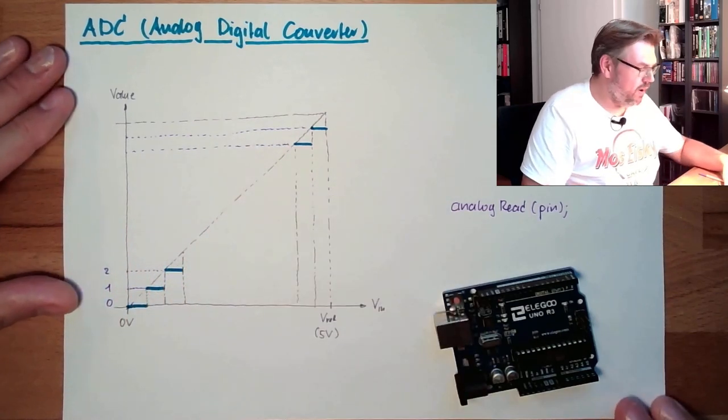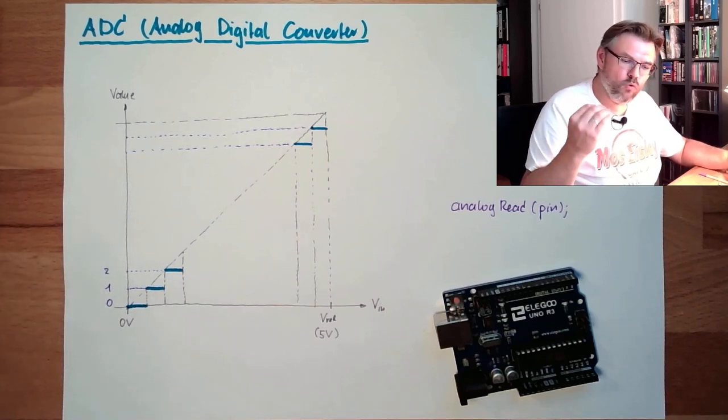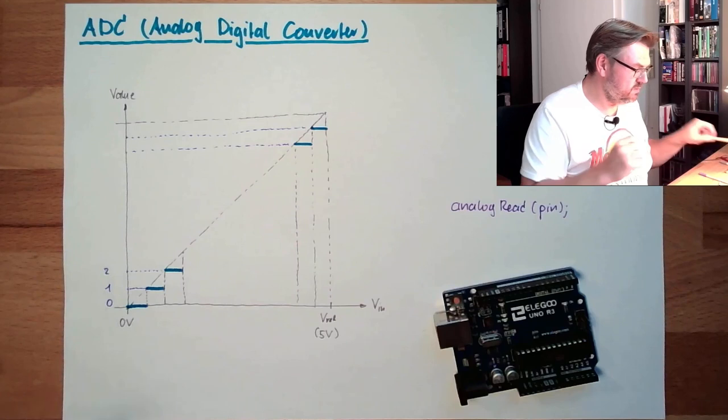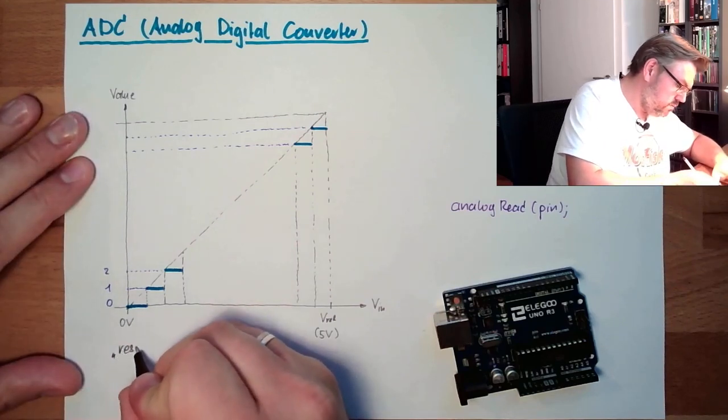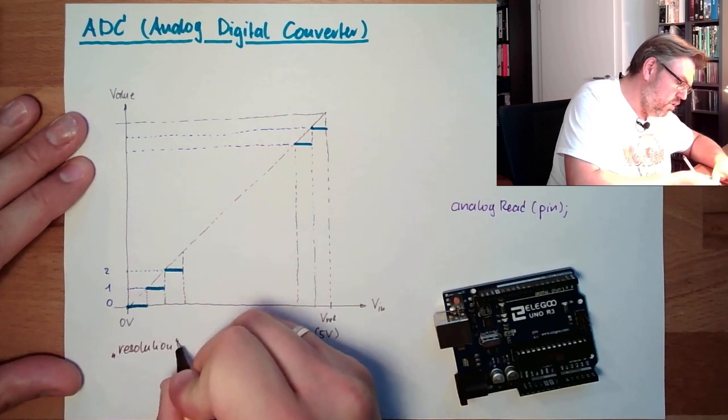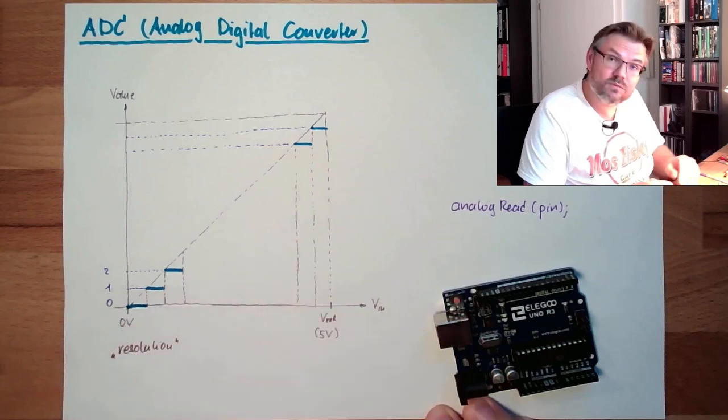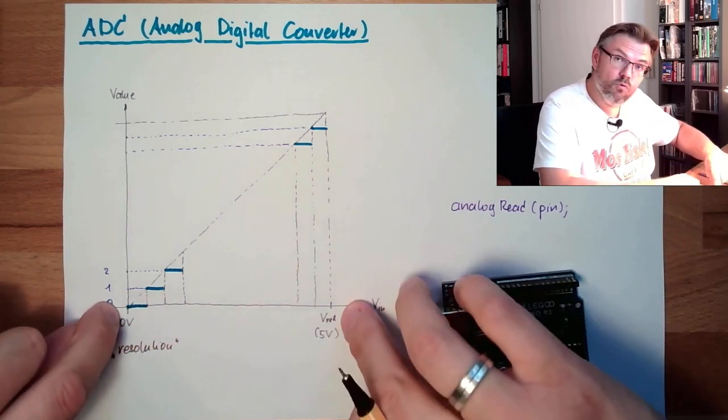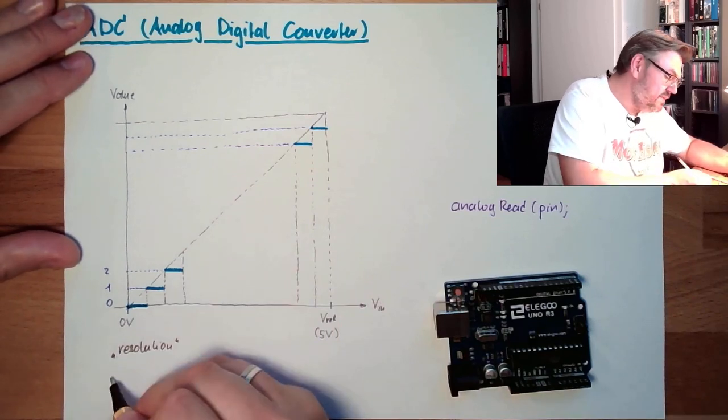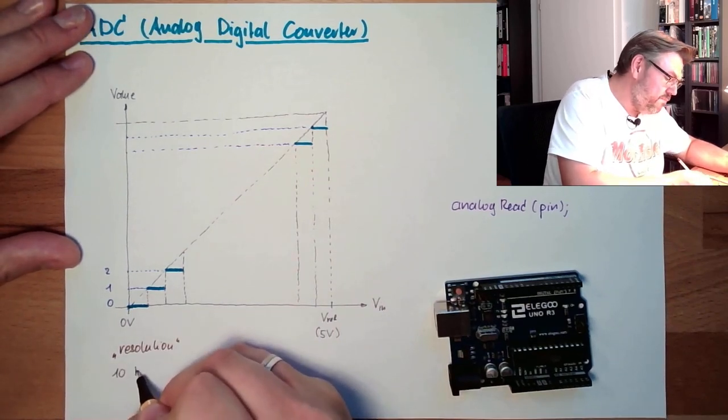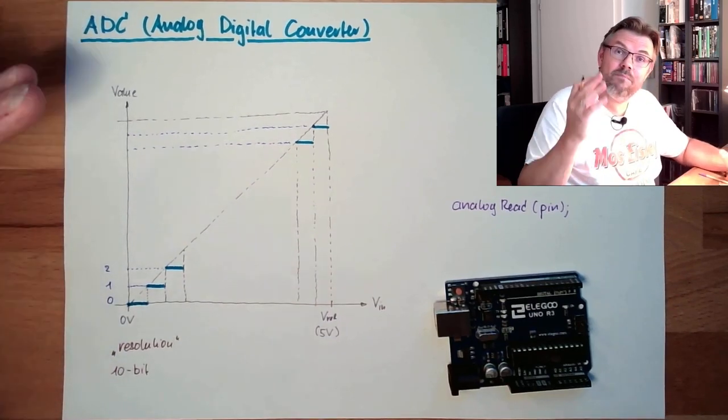And the first set, our Arduino is having a so-called resolution. Resolution gives in how many classes we are dividing this total range. And the resolution of our Arduino is called 10-bit. What does it mean? We are getting out a 10-bit number.